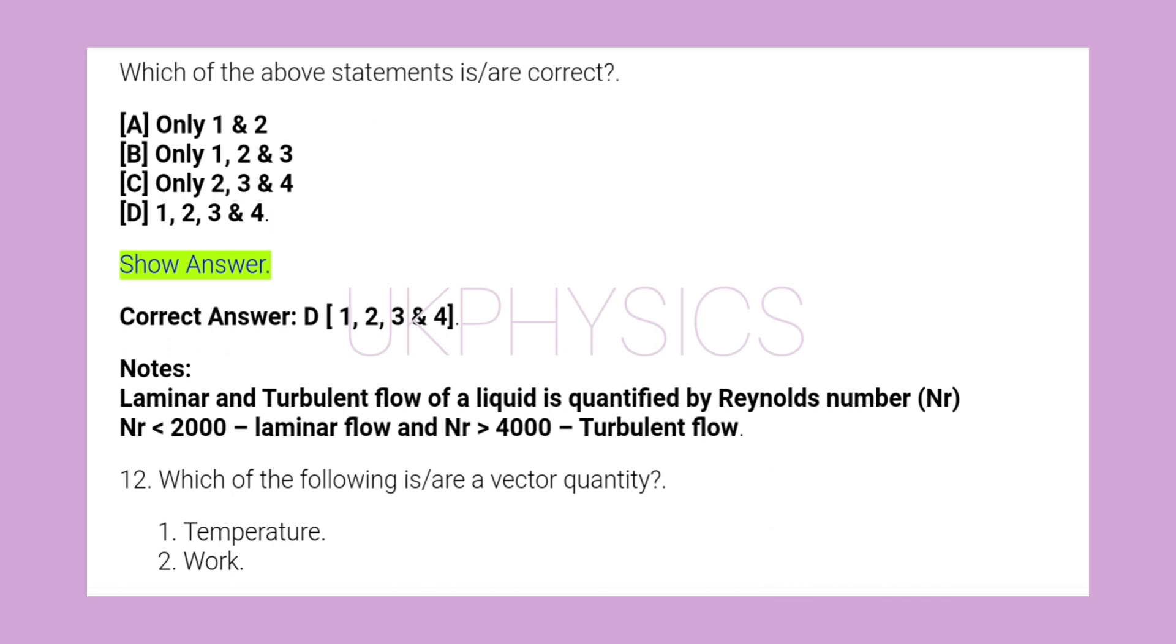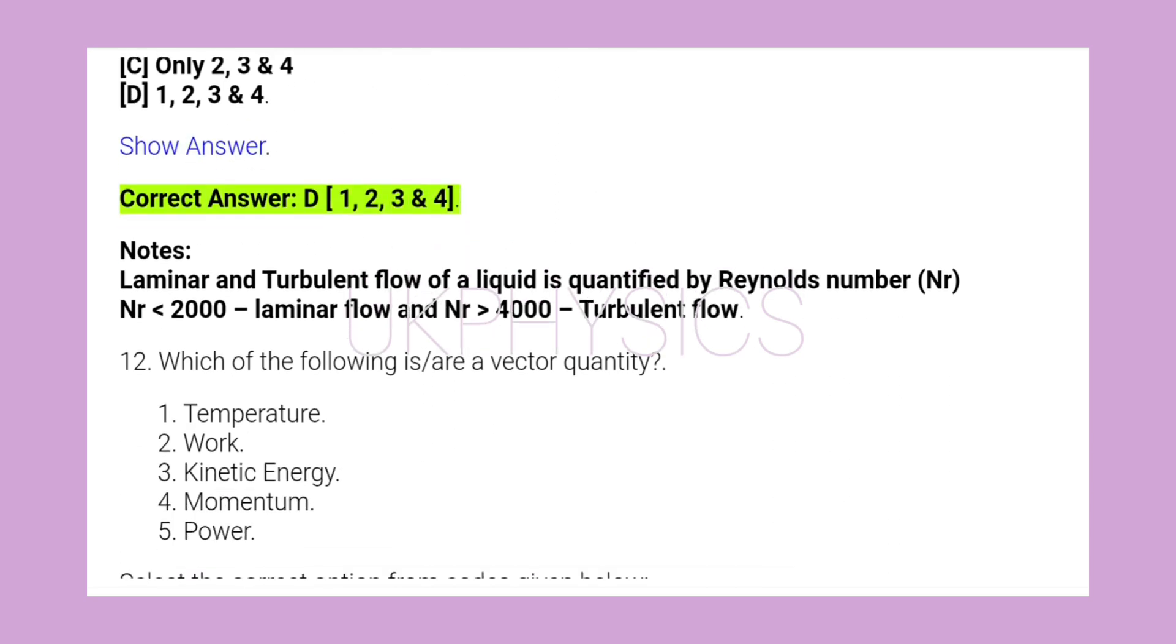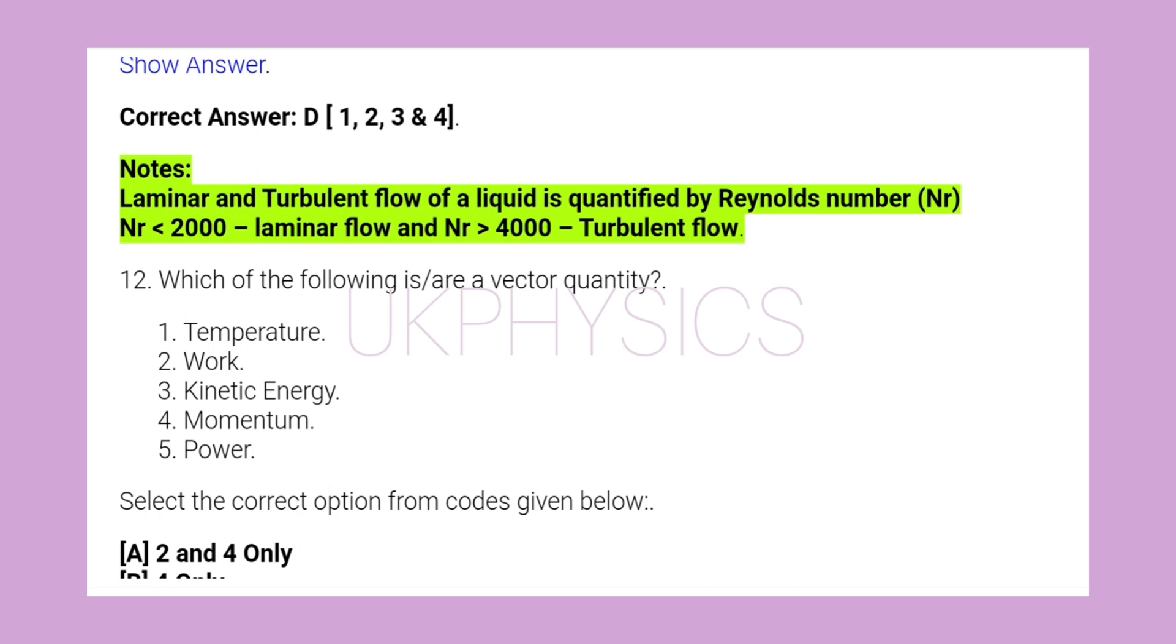Correct answer D. 1, 2, 3 and 4. Notes: Laminar and turbulent flow of a liquid is quantified by Reynolds number (Nr). Nr less than 2000 is laminar flow and Nr greater than 4000 is turbulent flow.